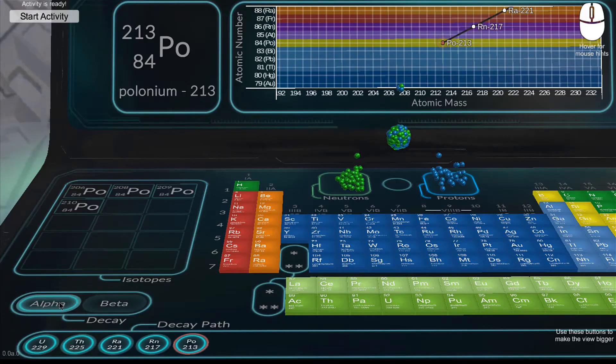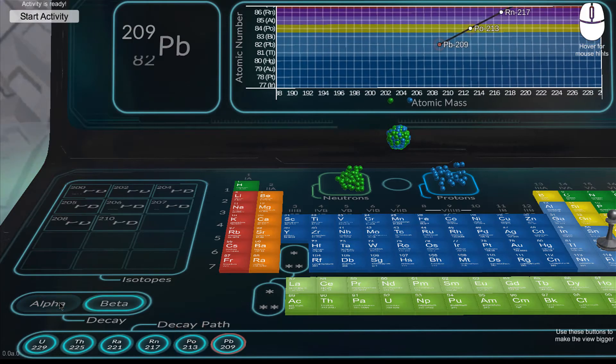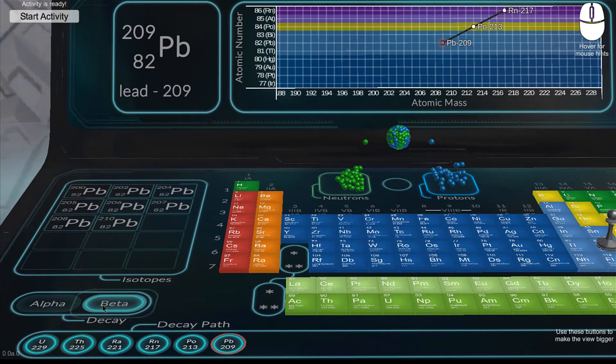Finally, the Decay tool shows both the alpha and beta decay paths for radioactive isotopes.